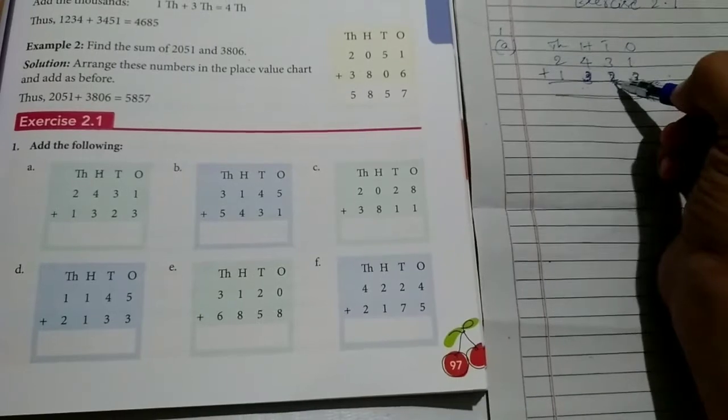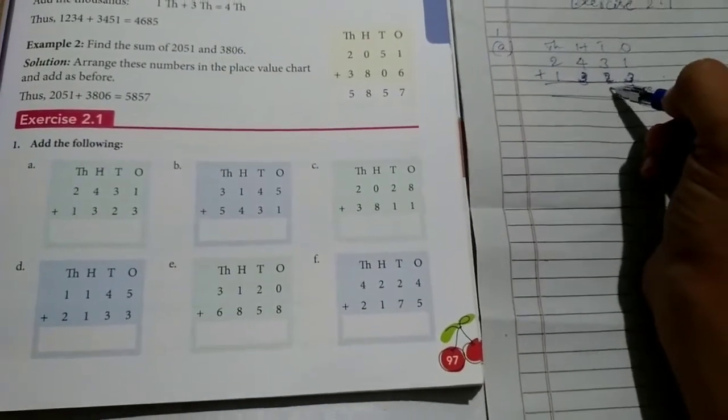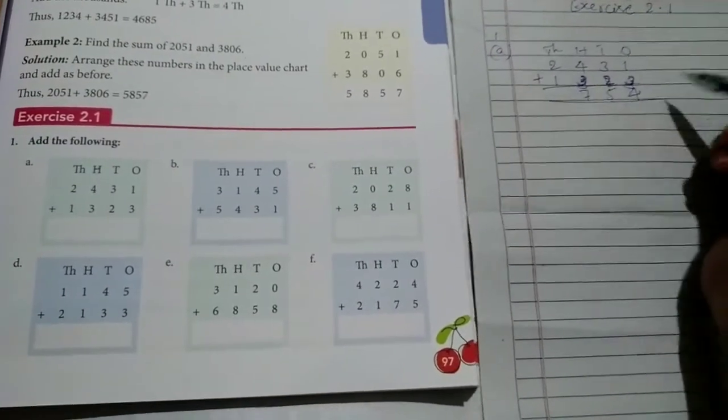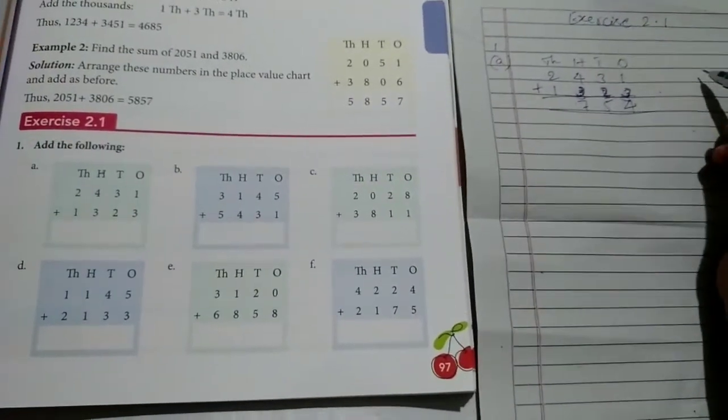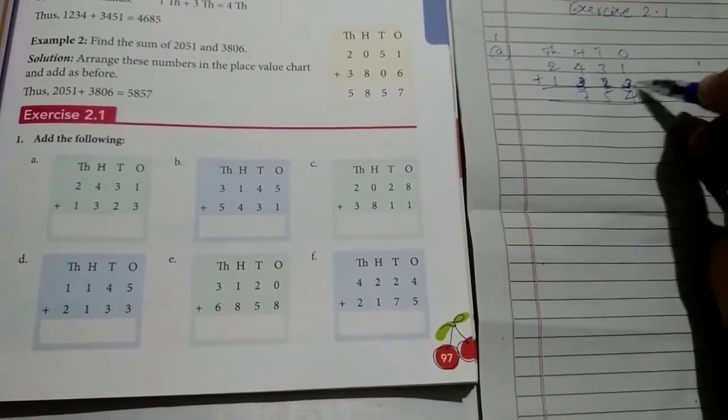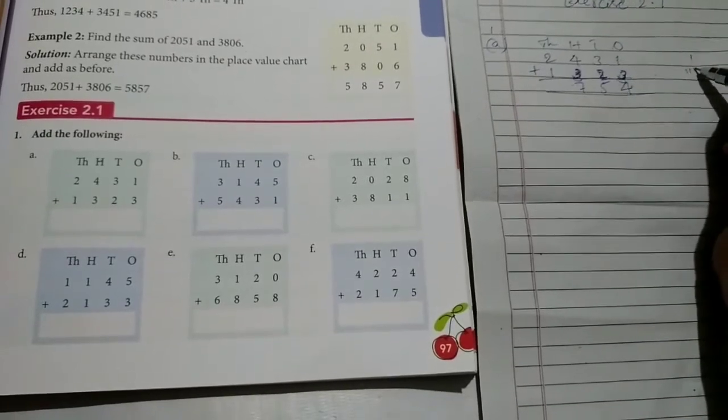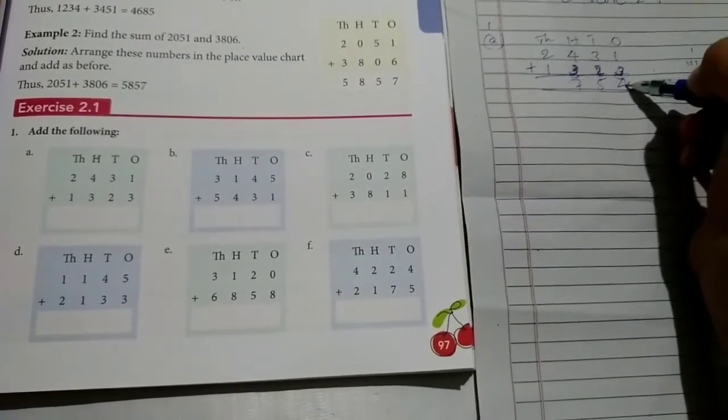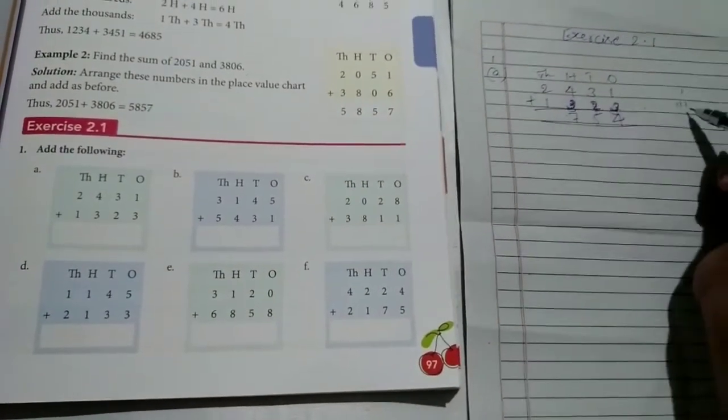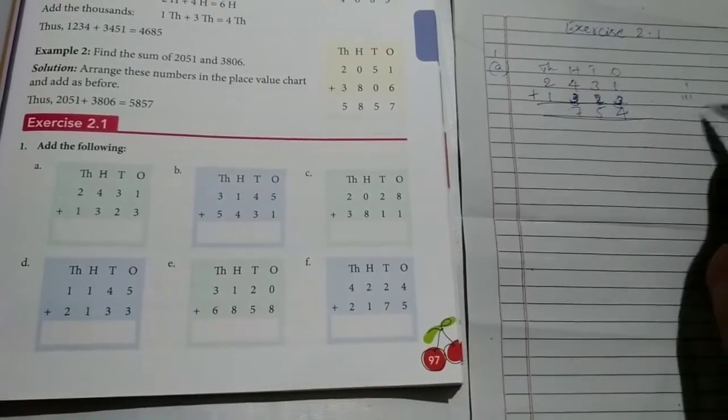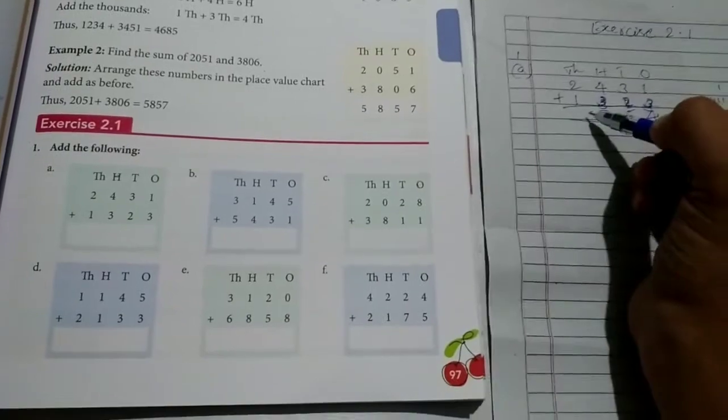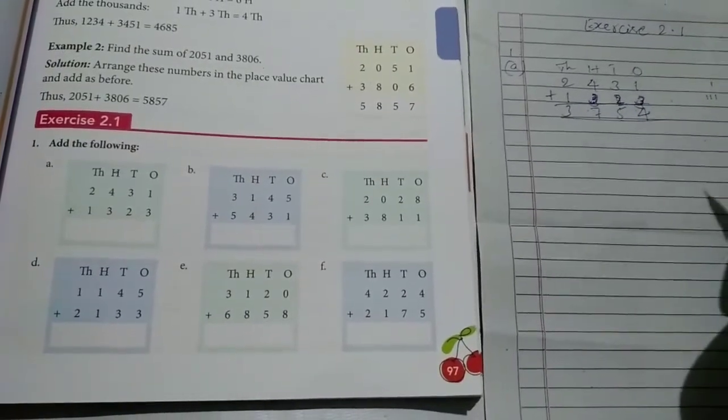1 plus 3 is 4. Next 3 plus 2, 5. 4 plus 3, 7. If you can't understand you take the lines here. Put the lines. For example 1, next here plus 3. 1, 2, 3. Now you add 1, 2, 3, 4. Take 4. Next as it is 4 plus 3, take 4 lines and 3 lines. Then you add, it will be easy to write. So it will be 7. And here 2, 2 plus 1 is 3.